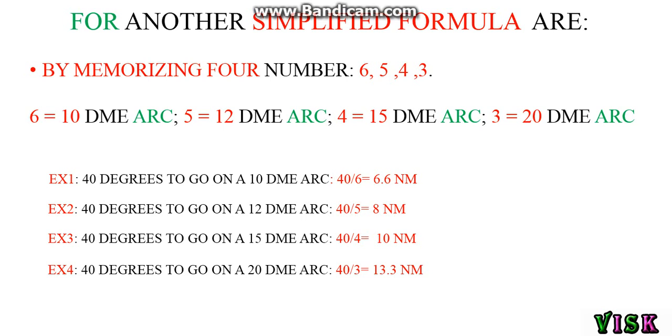I think this formula is very easy and better than the formula above. For the example, 20 DME refers to 3. In the example before, we have on radial 110 to intermediate fix on a 20 DME arc, we got 60 degrees. 60 degrees divided by 3 equals 20. This one is more accurate and easier because almost all airports in the world use 60 degrees to go on 20 DME, 15 DME, 12 DME, or 10 DME arcs.